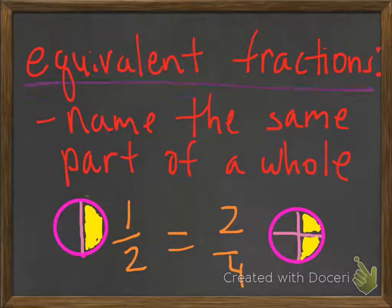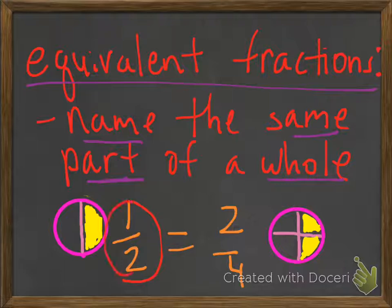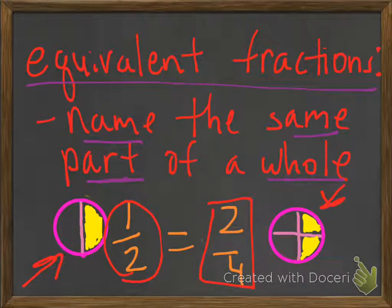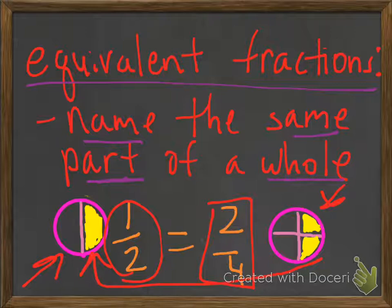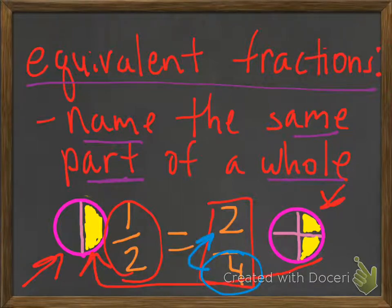An equivalent fraction names the same part of a whole. Let's take a look at our example. We have, again, one half, and we have a circle with half of it shaded in yellow. We also have two fourths — another fraction. Even though the same circle is divided into four parts instead of two, the two yellow shaded parts cover exactly the same amount of space as one half. So one half equals two fourths. Half of four is two, so two over four is the same as one half.